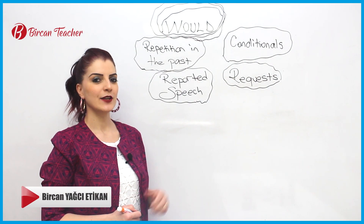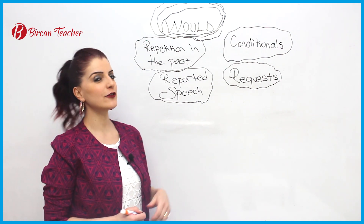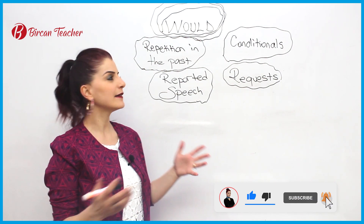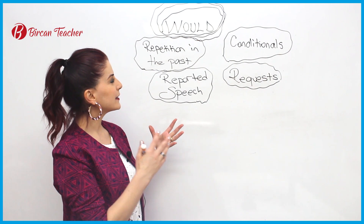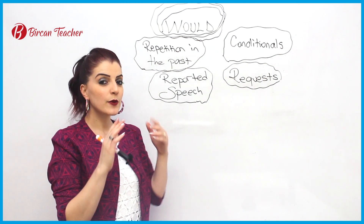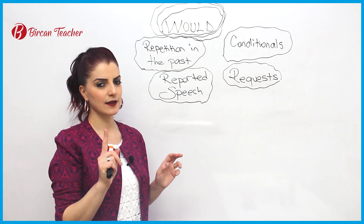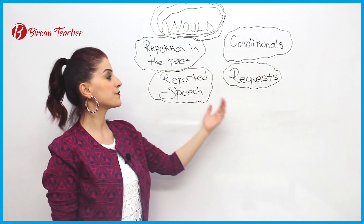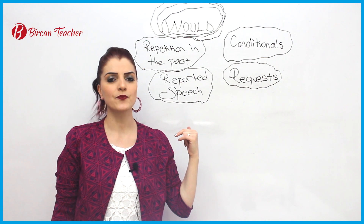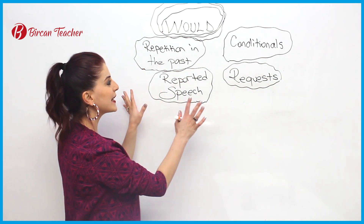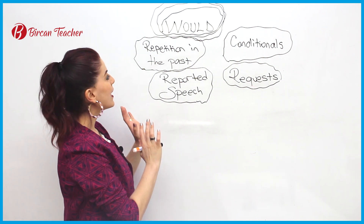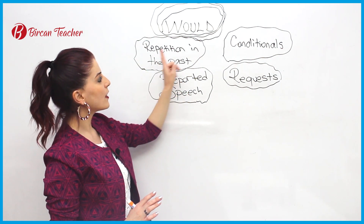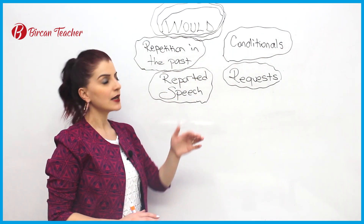Hi everybody. Today let's see and study about 'would' — what can be seen in several ways and different types. When we see 'would,' we shouldn't understand only one thing because sometimes it can be used as a conditional, sometimes as a request, sometimes in reported speech, etc. To make it clearer, I just want to give it in four forms: number one, number two, number three, number four.